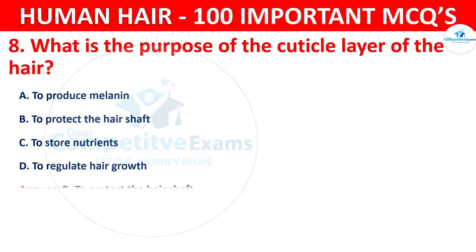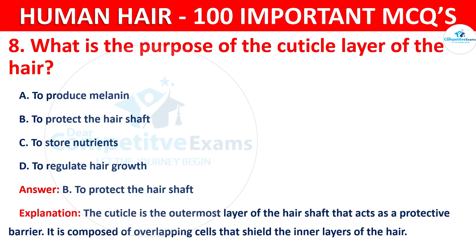The correct answer is B — to protect the hair shaft. The cuticle is the outermost layer of the hair shaft that acts as a protective barrier. It is composed of overlapping cells that shield the inner layers of the hair.